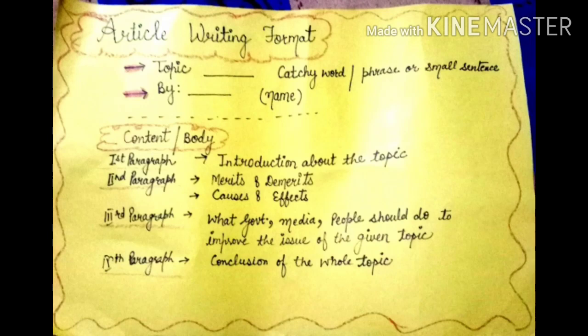In the third paragraph, write what actions — by the government, media, or specific people — should be taken to improve the issue of the given topic. Articles are mostly about problems or issues, so provide suggestions on how to overcome them. In the fourth and final paragraph, write a conclusion — summarize whatever you have written in short.